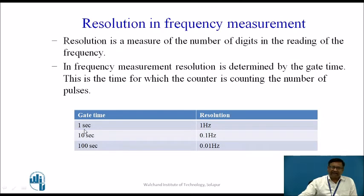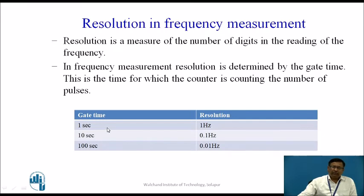That means error in measurement will be plus or minus 1 hertz. If you want resolution to be better, you can increase the gate time ten-fold, that is 10 seconds, and then resolution will be improved to 0.1 hertz, so the error in measurement will be just 0.1 hertz. To decrease the error in measurement or to increase the resolution, we have to increase the gate time. That is why in frequency measurement, resolution is determined by the gate time. The gate time is the time for which the counter is counting the number of pulses.